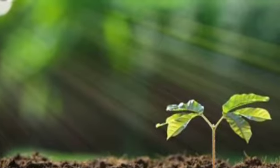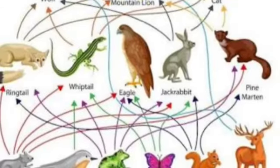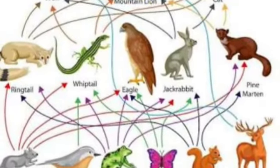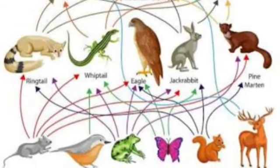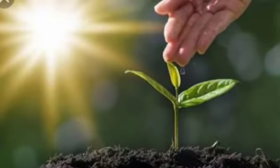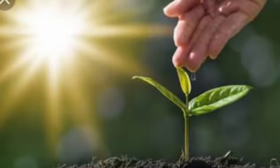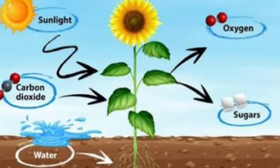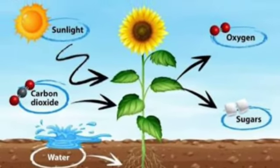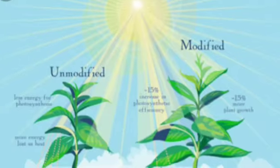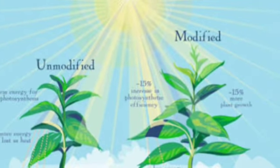Photosynthesis is the process by which green plants and certain other organisms transform light energy into chemical energy. During photosynthesis, in green plants, light energy is captured and used to convert water,